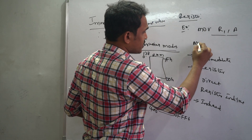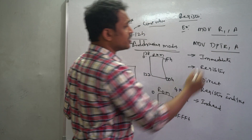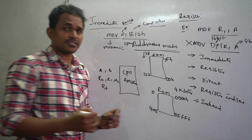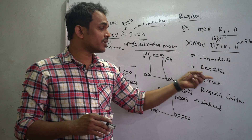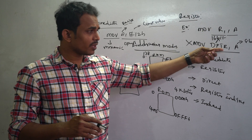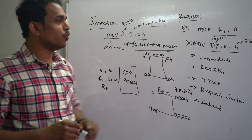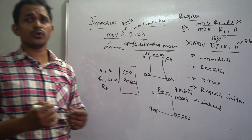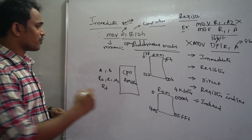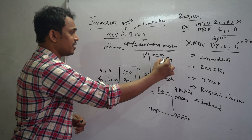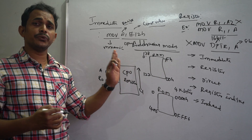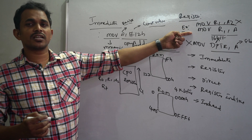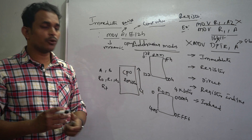For example, MOV DPTR, A is not valid under register addressing mode because DPTR is a 16-bit register and the accumulator is 8-bit — they are different sizes. Also, sharing data between general purpose register to general purpose register directly is not allowed. Register addressing mode requires equal-size registers.